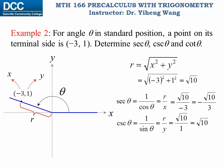Lastly, cotangent theta is the reciprocal of tangent theta, therefore it is x over y. x is negative three, y is one, therefore cotangent theta is negative three.